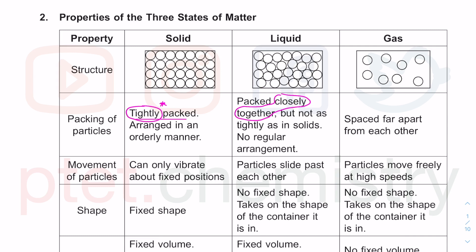What is very important is arrangement. The arrangement in solids is orderly, whereas there is no regular arrangement for liquid, and no regular arrangement for gases. Gaseous particles are spaced very far apart from each other. Liquid particles have a little bit of space in between, solid particles are tightly packed with no space in between at all, and they are arranged in an orderly manner.